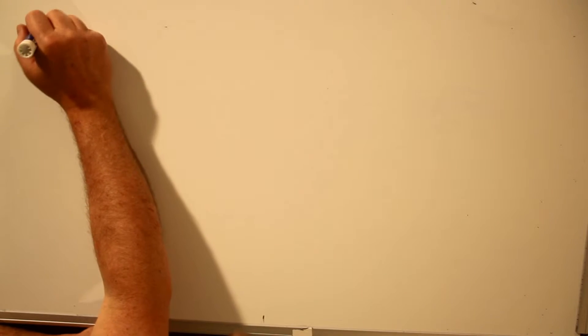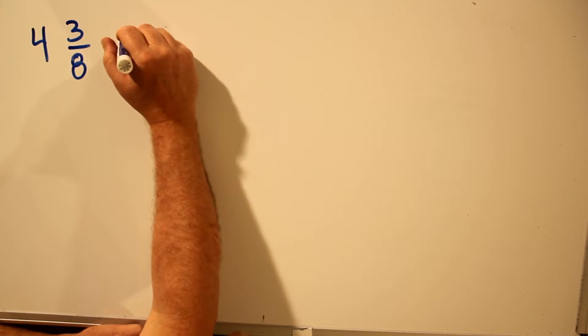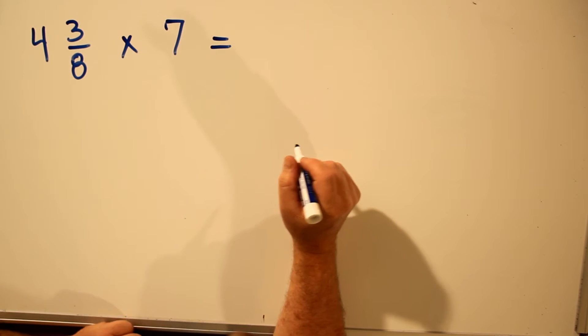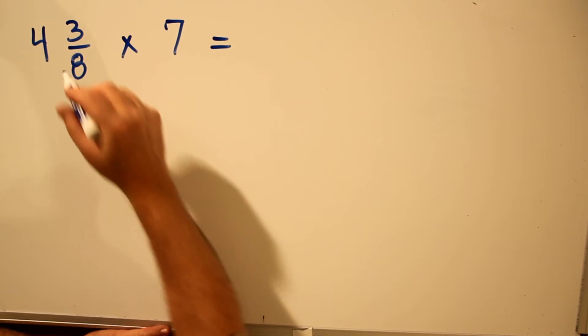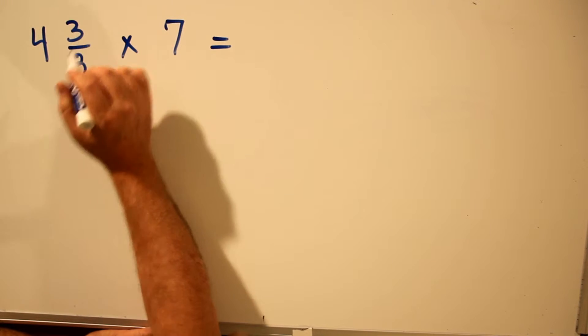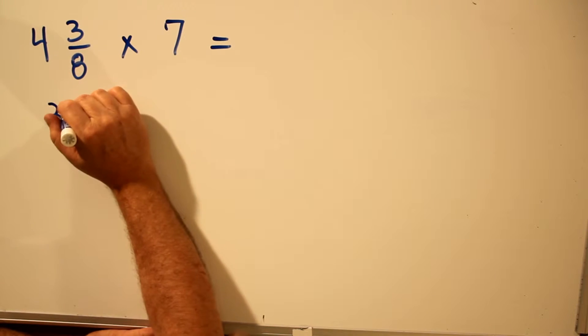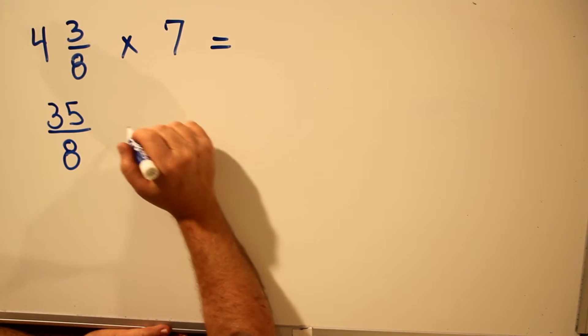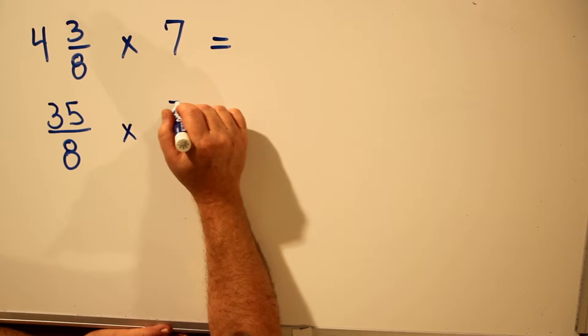Let's multiply a number like 4 and 3/8 times 7. To multiply a mixed number, you first have to convert it to an improper fraction. 4 times 8 is 32, plus 3 is 35 on the top. Keep the bottom number the same, and now you can multiply it by 7.